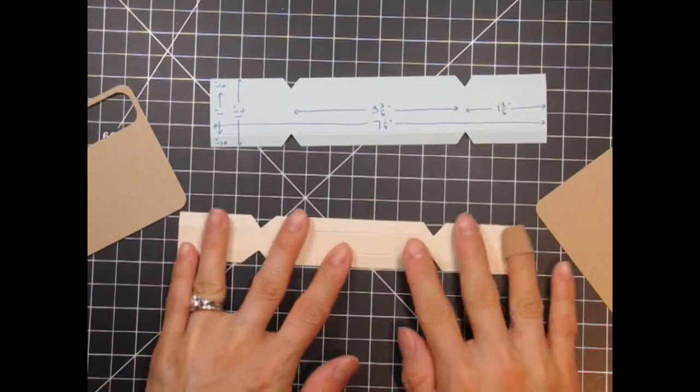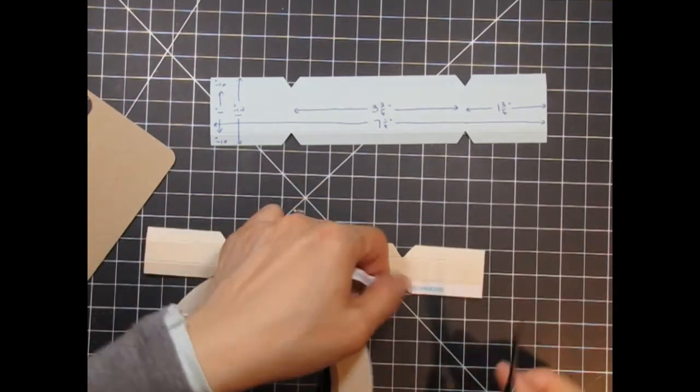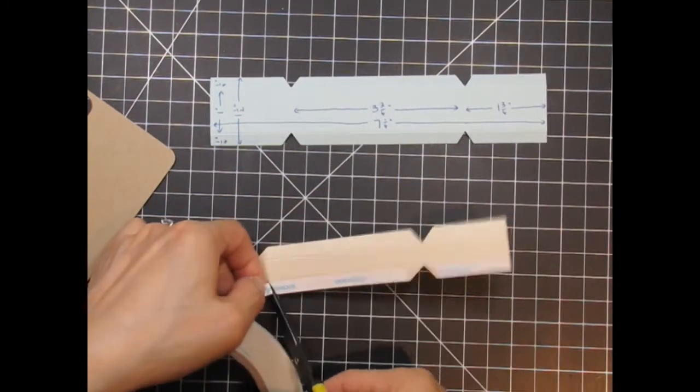Again I apply very strong score tape, remove the backing and apply it to one side of the box making sure that all the edges are parallel with the die cut.